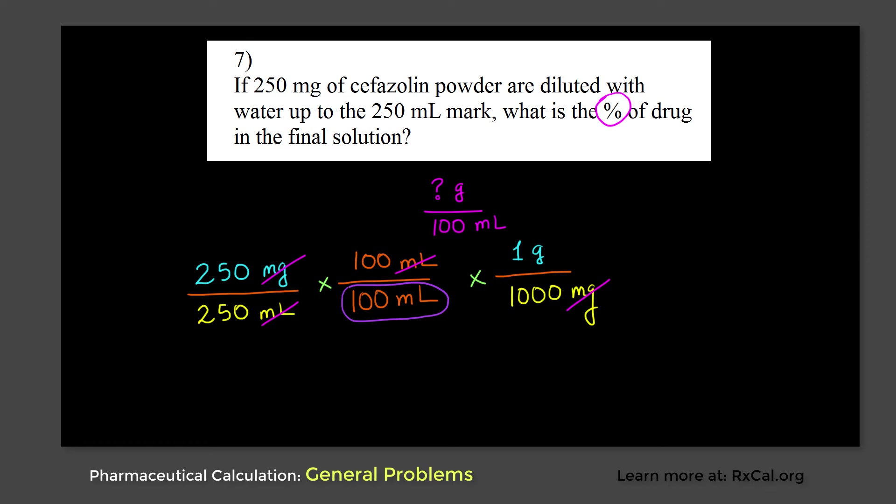So we're going to rewrite it after doing all the calculations. This 250 and 250 cancel out. So this is going to be 0.1, the numerical value, but the unit is going to be gram in the numerator and 100 ml in the denominator. So we have 0.1 gram present per 100 ml.